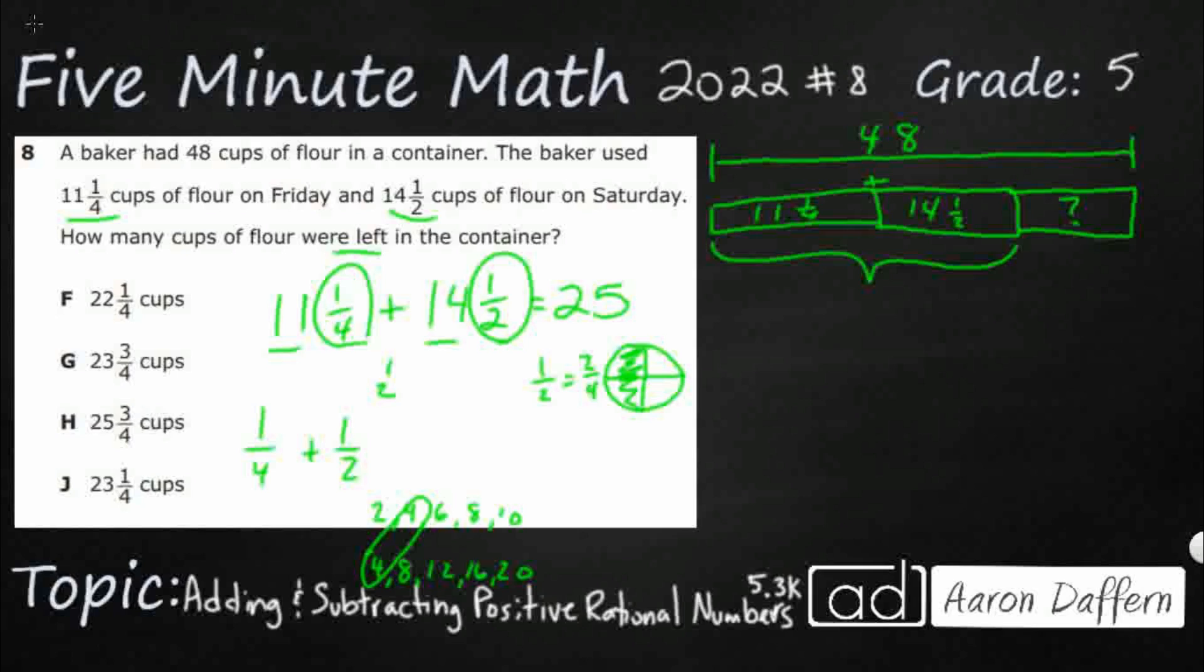Or I can make an equivalent fraction like this. We can say ½ times something is going to equal fourths. So that's going to be 2 times what makes 4. That's 2 times 2. So I need to make the numerator 2, so it's 2 over 2 or 1 whole. Either way, it's going to be 2/4. So let me just rewrite that as 2/4.